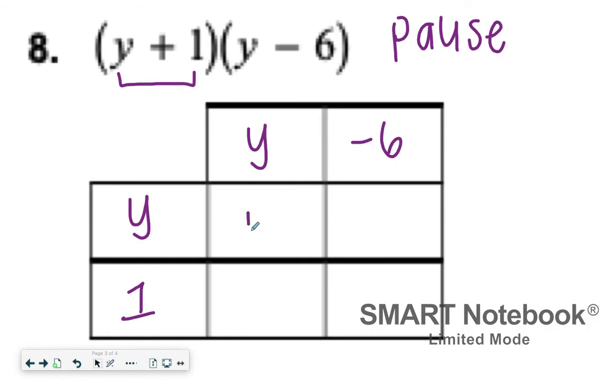Y times Y, Y squared. Y times negative six, that's negative six Y. One times Y would be one Y. And then one times negative six is negative six.